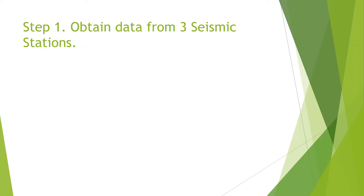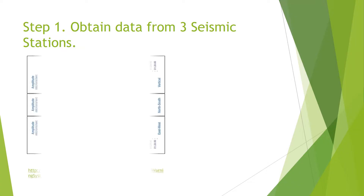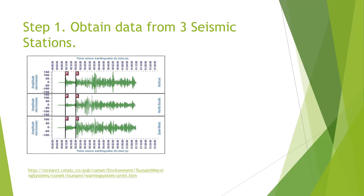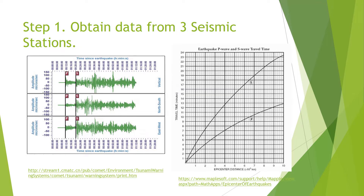Now, how do we apply this triangulation method? First, you need to obtain recordings from three seismic stations. In the first figure, you can see a sample seismograph reading showing the arrival times of the P wave and S wave. The figure on the right shows a distance-time graph of the P wave and S wave, depicting that the P wave arrives first because it moves faster than the S wave.